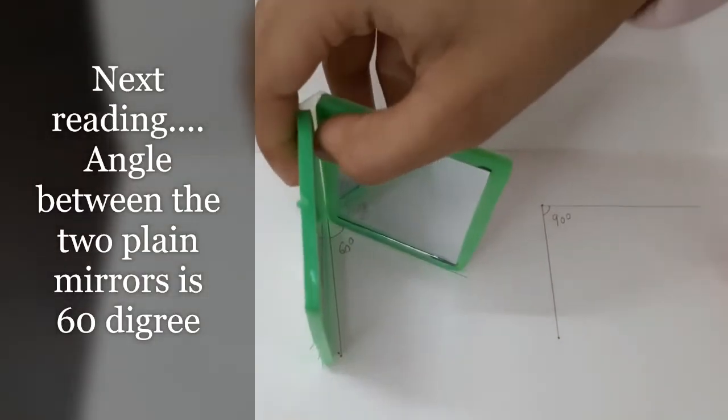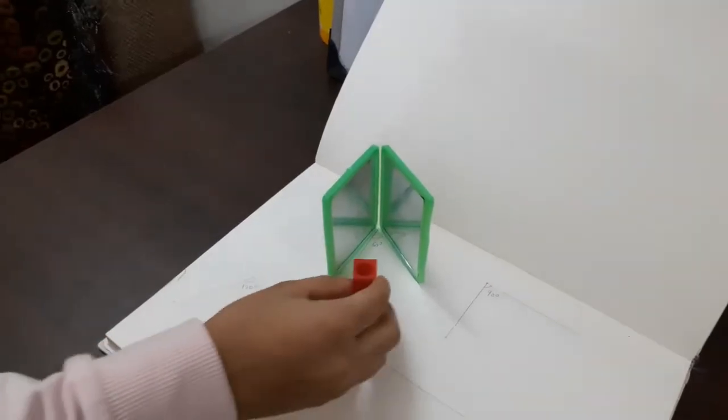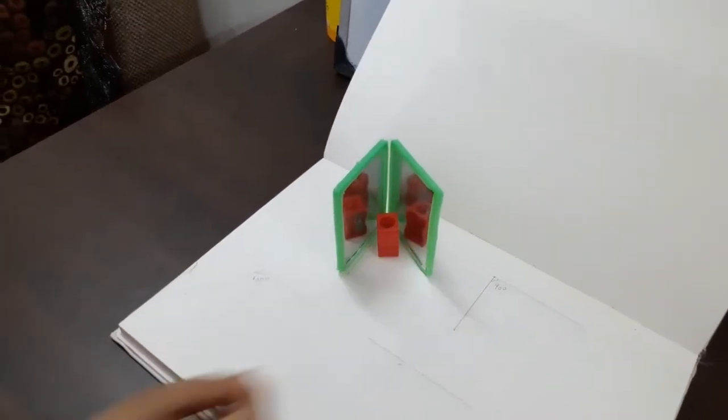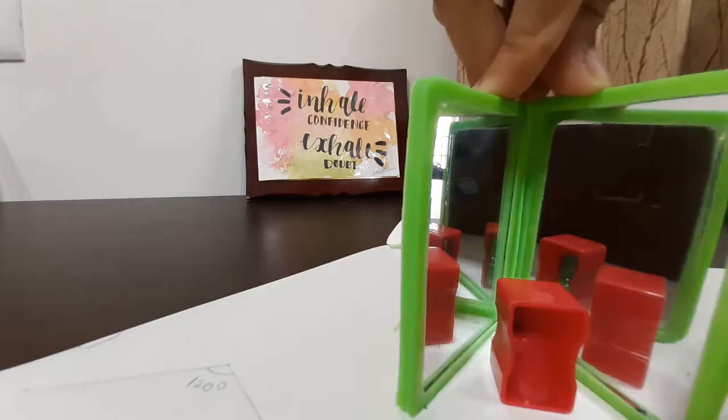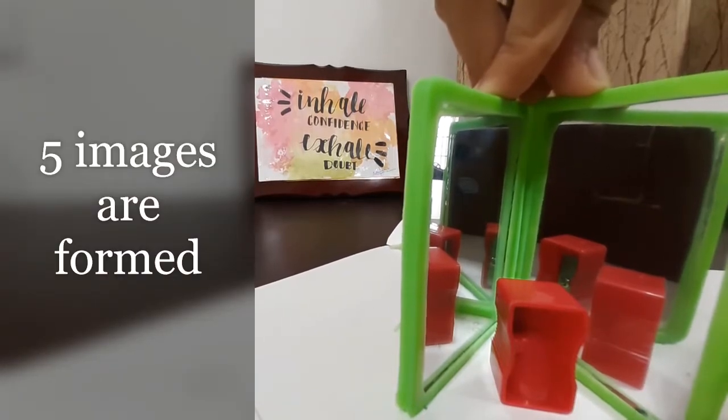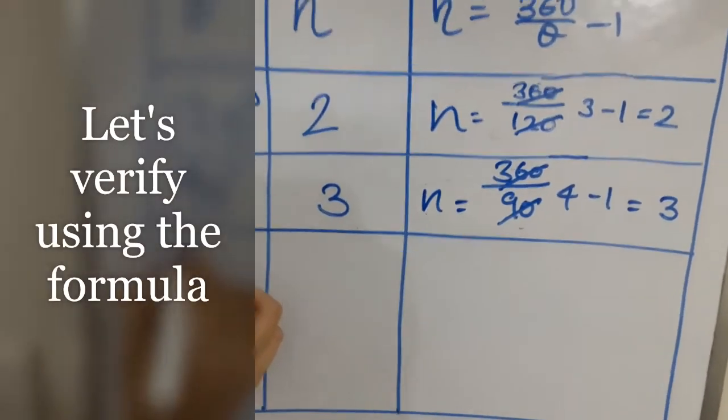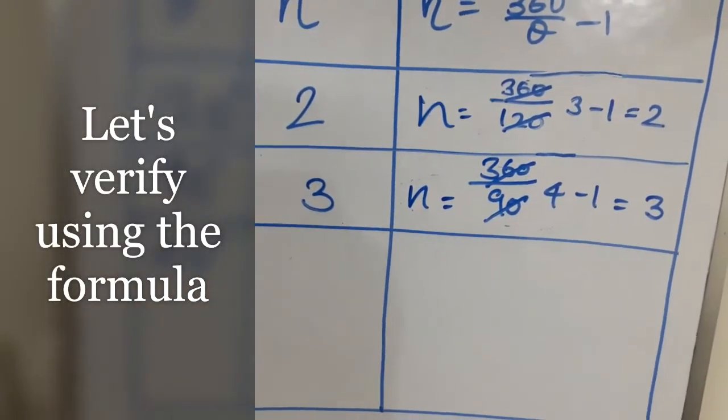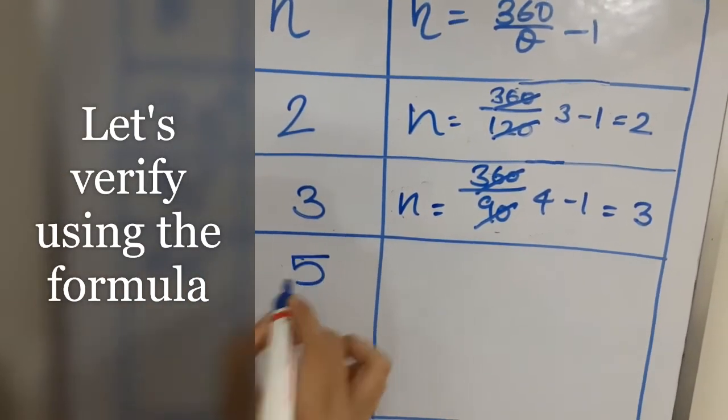Now I will place the mirrors at 60 degrees. Let us place the object close to the mirror. Now you can see five images. Two at each side and one in the center. We have placed the mirror at an angle of 60 degrees and we observed five images.